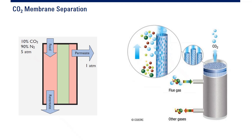For CO2 membrane separation, a membrane is used to capture and separate CO2 from the flue gas. Flue gas is the dirty gas emitted from a plant — the exhaust gas from the combustion process.